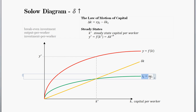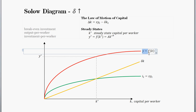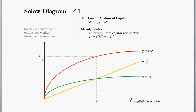Depreciation doesn't enter into these other variables at all, so this is the only place delta appears. If we increase delta, what does that do? Well, increasing delta increases the slope of this line. The line is stuck at the origin, so if we increase delta, it's just the slope of this line that's going to make it slope upward more steeply.